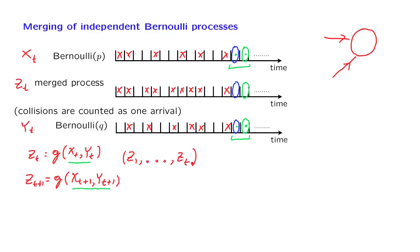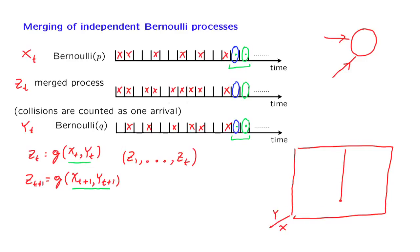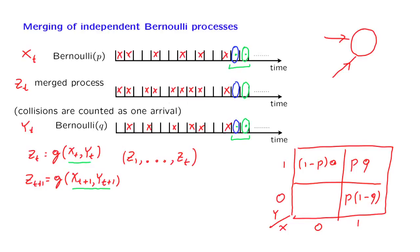Now let us calculate the probability of an arrival during a typical slot. During a typical time slot, there are four possibilities having to do with whether the X process has an arrival or not, and whether the Y process has an arrival or not. The probability of an arrival in both processes is, by independence, p times q. There's a probability p times (1 minus q) of an arrival in the first process and no arrival in the second. There's a probability (1 minus p) times q of no arrival in the first and an arrival in the second. And finally, there is probability (1 minus p) times (1 minus q) of no arrival in either process.